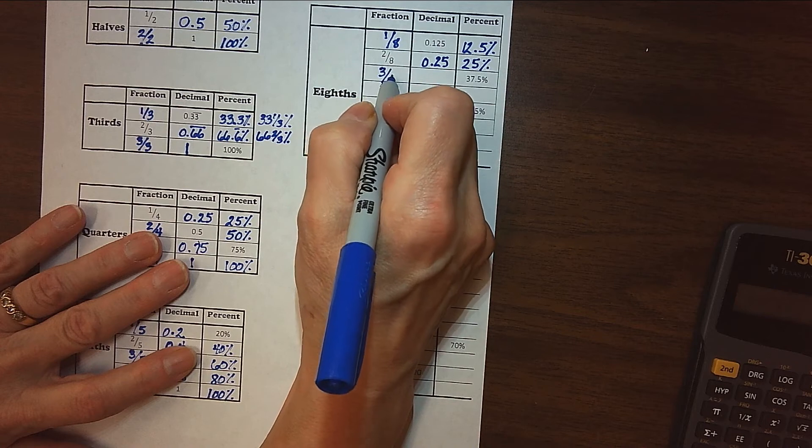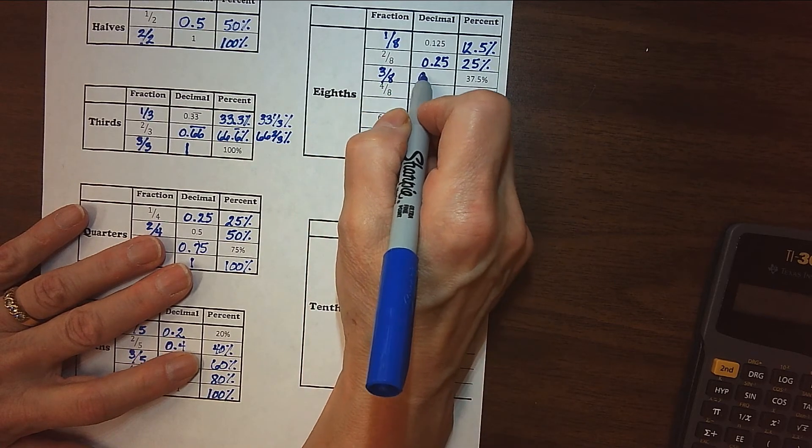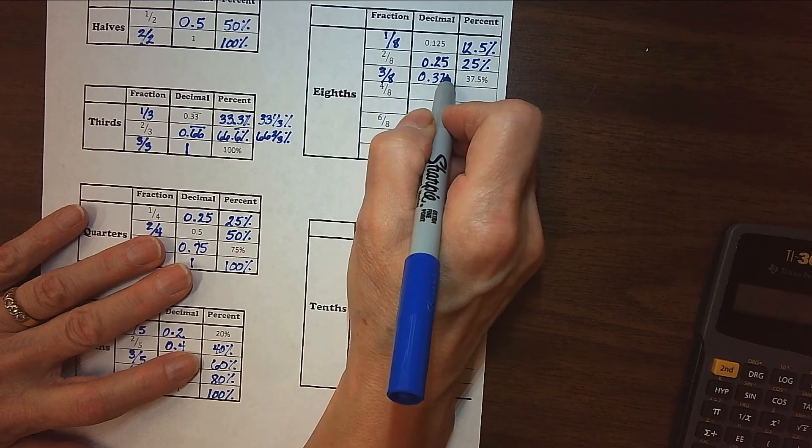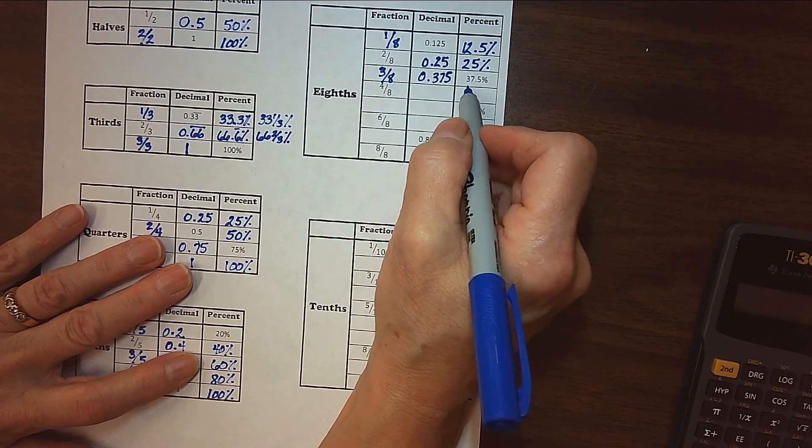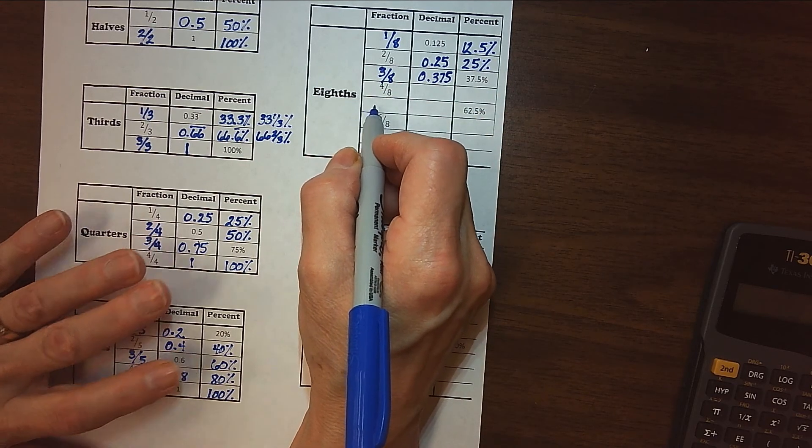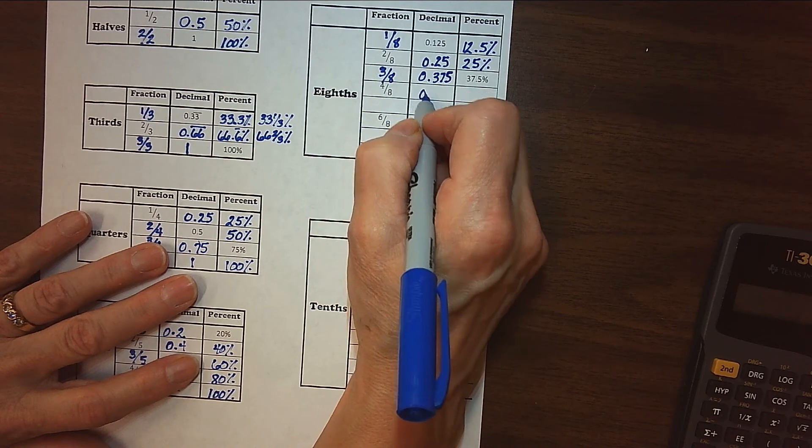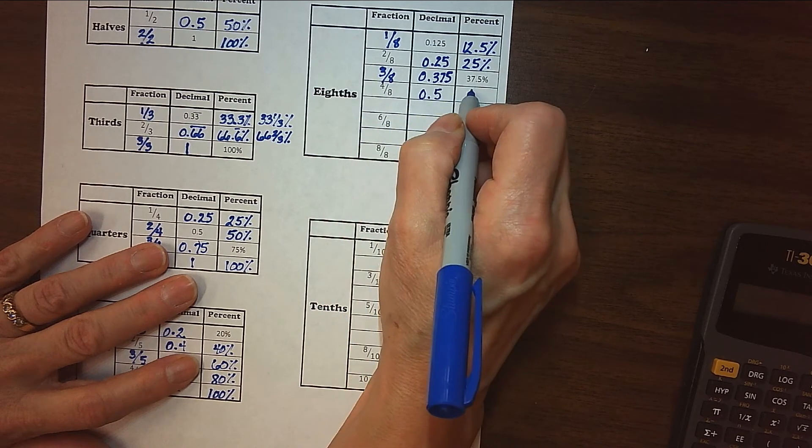All right. And then our next one would be three-eighths. And three-eighths is 0.375, and then 37.5%. Four-eighths is the same as one-half. If we reduce this, four out of eight is one-half. So we know that's going to be our 0.5 or 50%.